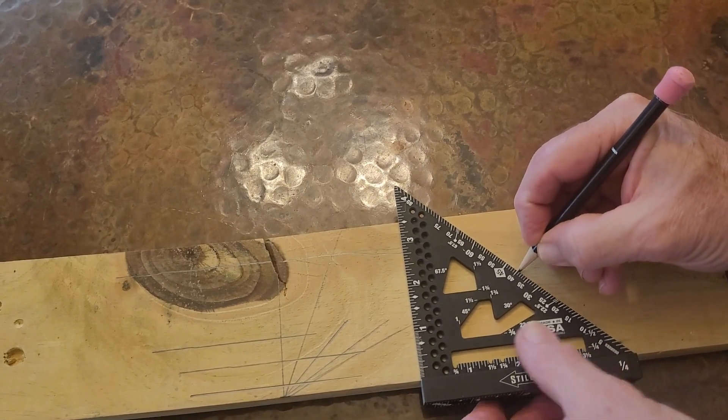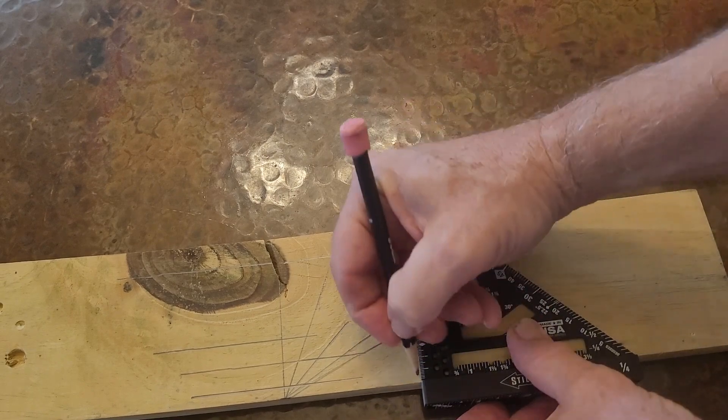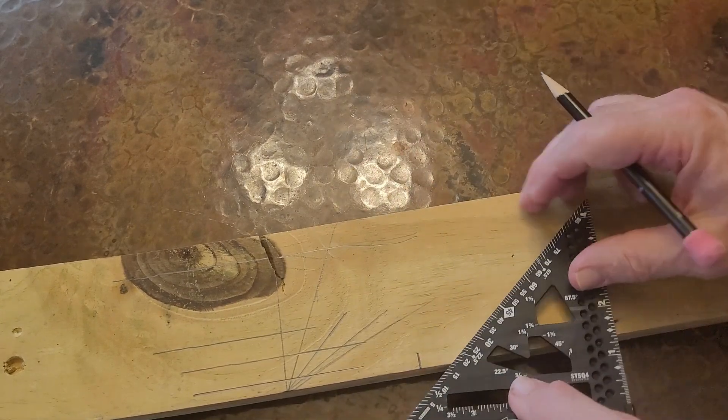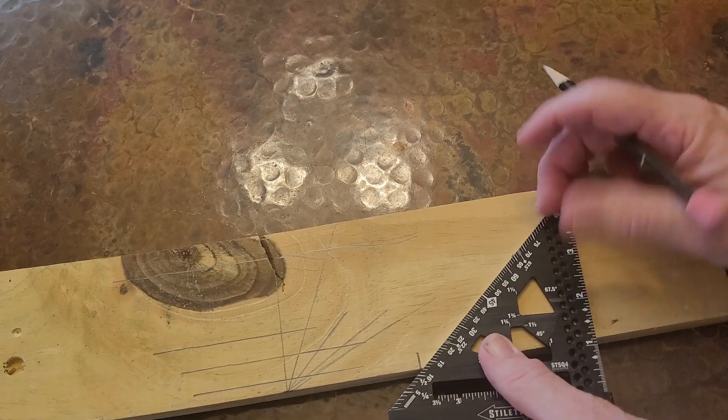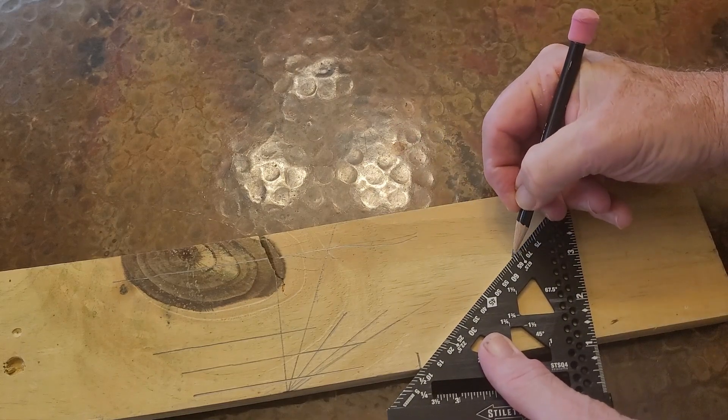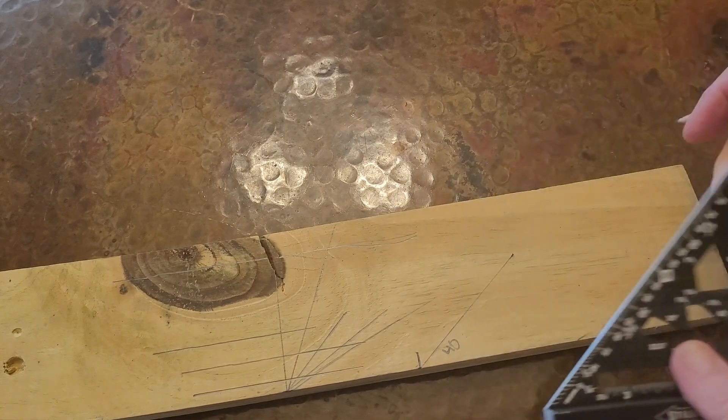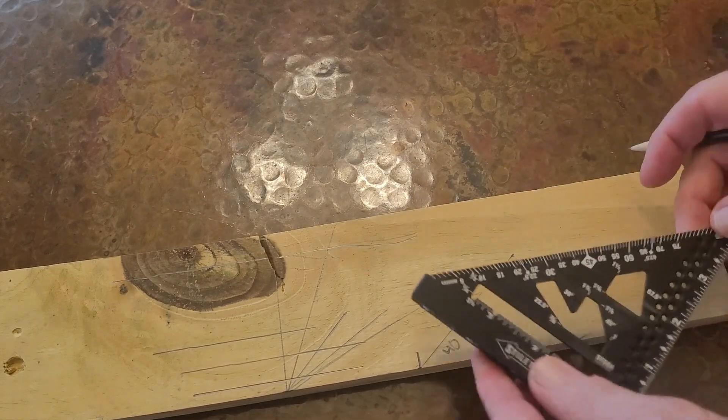And you can do a lot of angles when you line this up. If you want a 40-degree angle, put a mark here where you're starting from, then let's draw a line. There's a 40-degree angle.